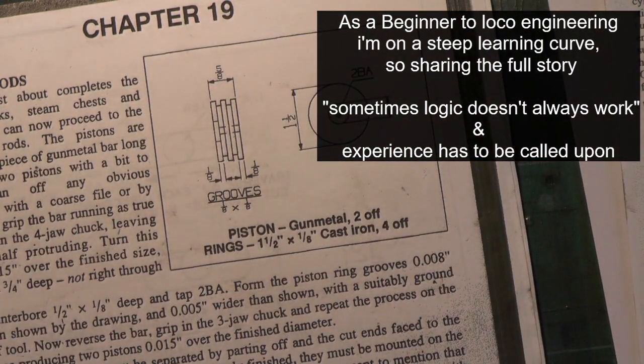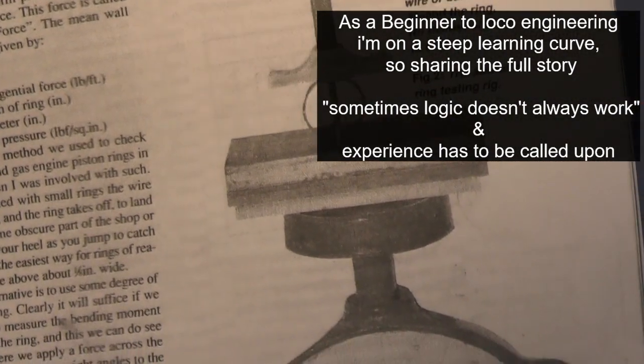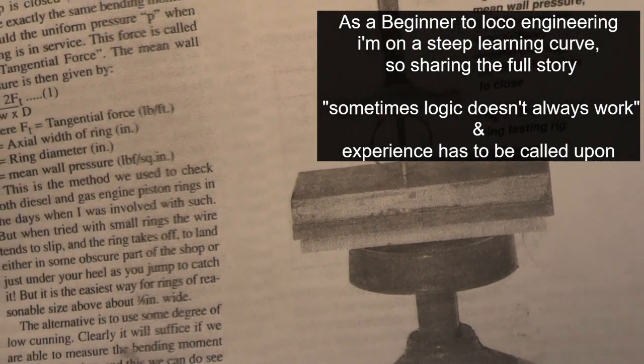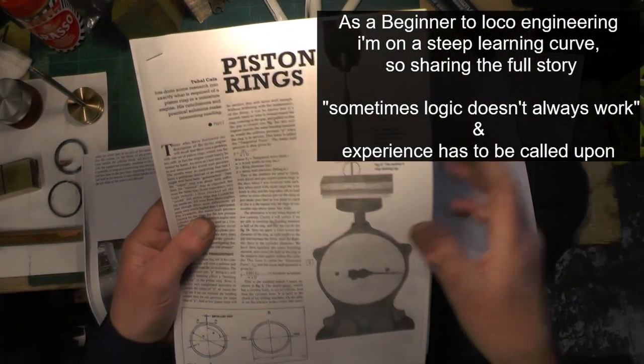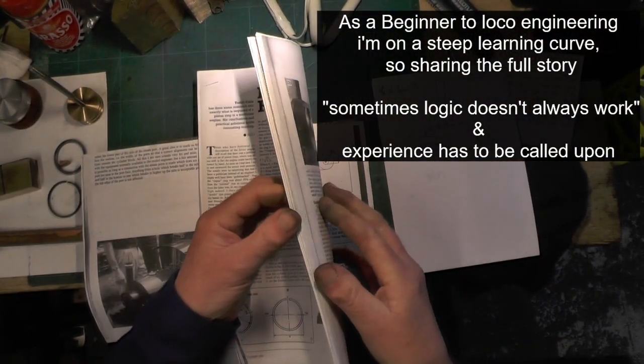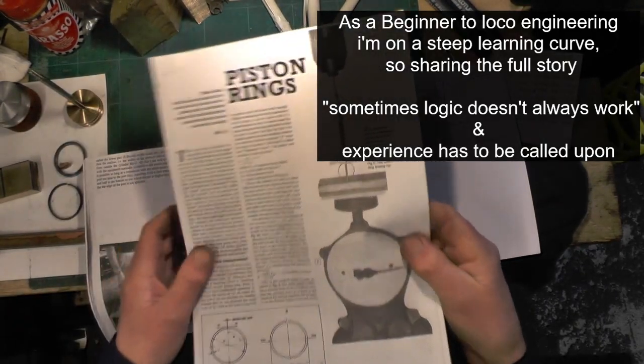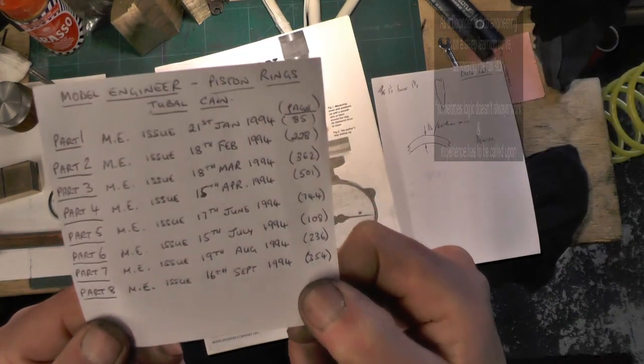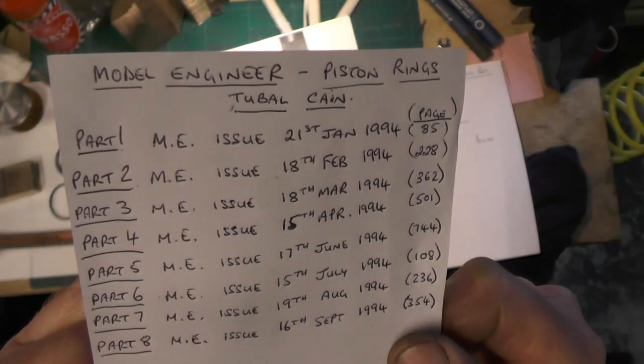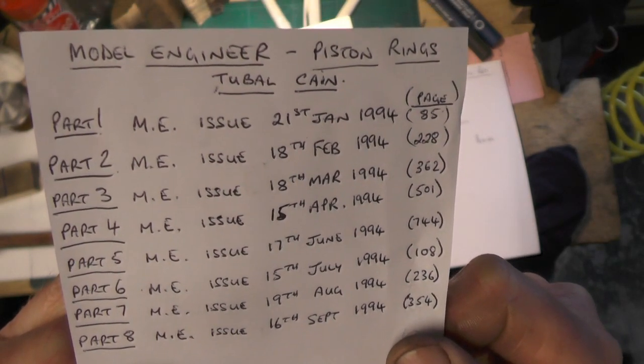So I've investigated further, and I've got a write-up out of the Model Engine here, which were done in 1994, and it's a very in-depth write-up about making piston rings. If you want to take a look at them, they're the issues that it was in. If you want to take them issue numbers and the dates that when they were done.